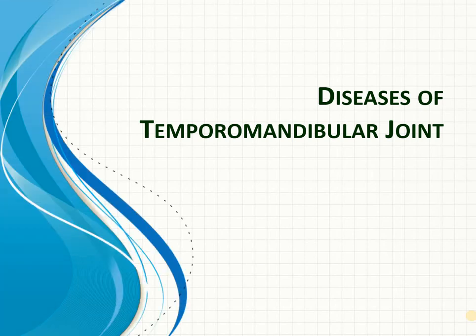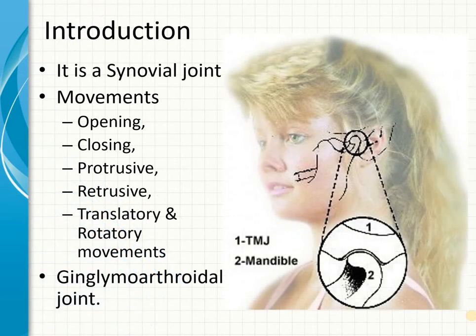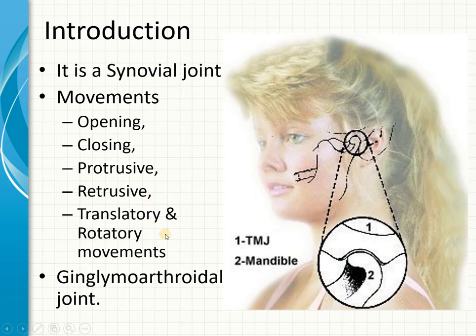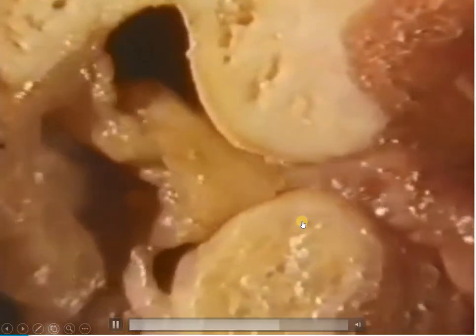Today's lecture is on the diseases of the temporomandibular joint. The temporomandibular joint is a synovial joint mainly formed by the junction of the mandible and the temporal bone. The mandibular condyle articulates with the articular surface of the temporal bone, forming the TMJ, which allows opening and closing movements of the jaw along with protrusive, retrusive, and translatory movements.